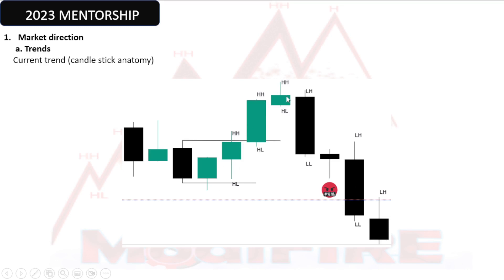Trust me — if you can draw this and get it right, you will understand the structure and the trends. Now let's come to the downtrend. On the downtrend, we have this second candle breaking the low of this candle, failing to break above that candle. This makes the move a lower high — it's lower than this area but higher than that area — then we have a lower low, which is lower than both areas.